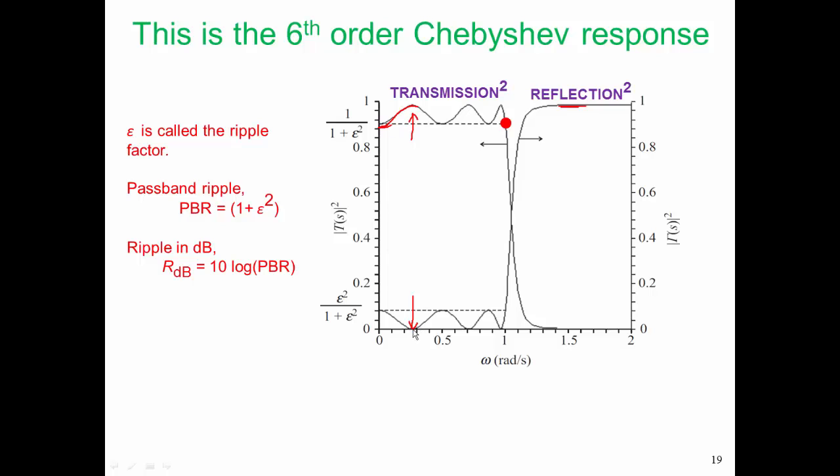So when people talk about the poles of a filter, you need to be careful as to what they're talking about, because the poles in the transmission response are the zeros in the reflection response, just as the poles in the reflection response are the zeros in the transmission response.